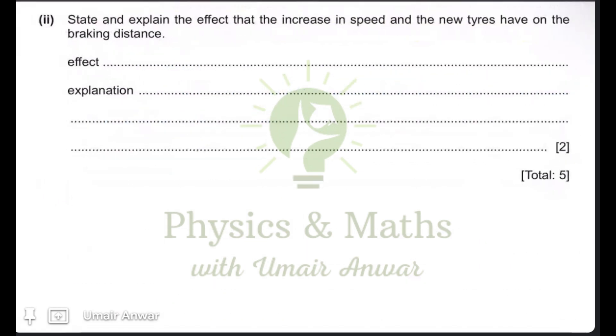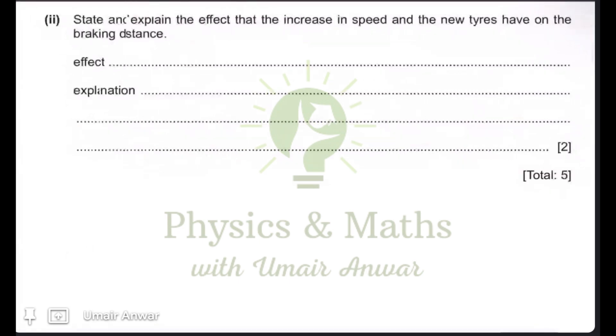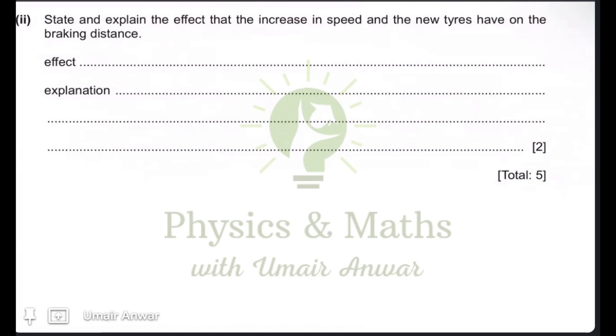The next part: state and explain the effect that increase in speed and the new tires have on the braking distance. Now, the braking distance in this case is going to decrease. And the reason for this is that the newly fitted tires, the new tires would have a larger friction. So we would say that force of friction would be larger. Old tires and the smooth tires do not offer much amount of resistance and that is why the braking distance is lower in that case. But here we are going to experience larger force of friction which would decrease the braking distance here.